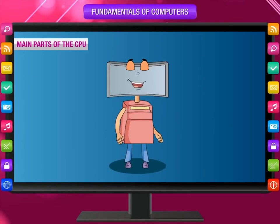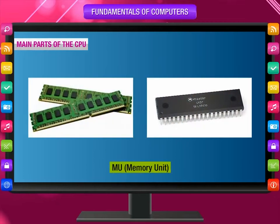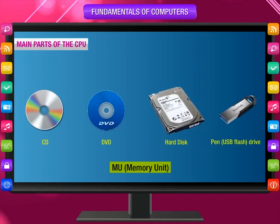There are three main parts of the CPU. First, the Memory Unit (MU): the memory unit stores information temporarily for making calculations. This temporary storage is made up of registers. A register is a device capable of storing a specific amount of data such as one word. If you want to store information permanently, send the output to a storage device like CD, DVD, hard disk, pen drive, USB flash drive, etc.